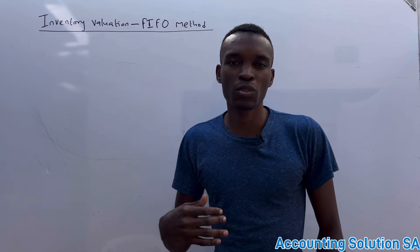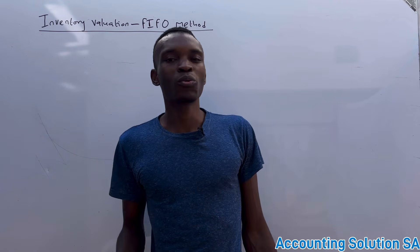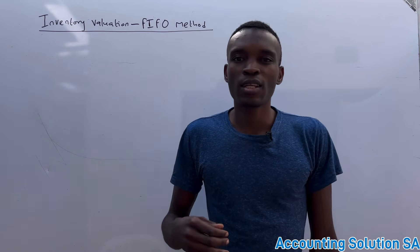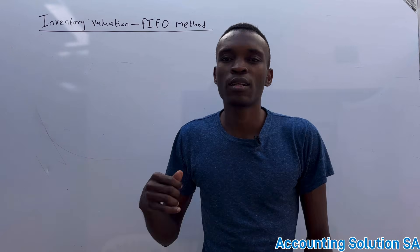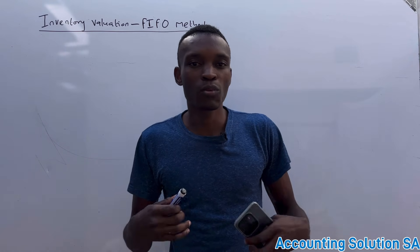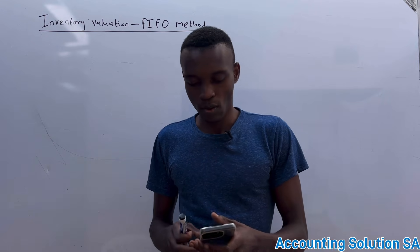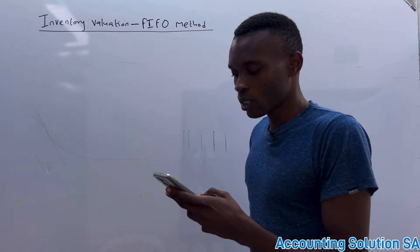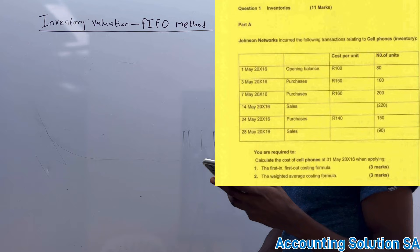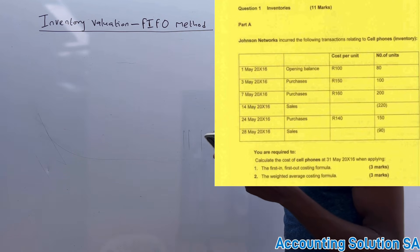Now let's go to this example that we're going to use to calculate. We have been given the information of May from 1 May until 28 May, and they required us to calculate a First In First Out method.